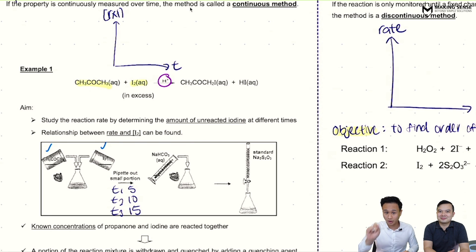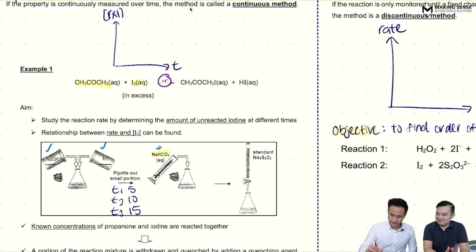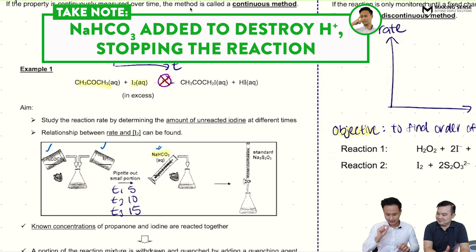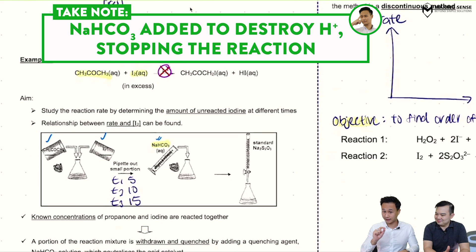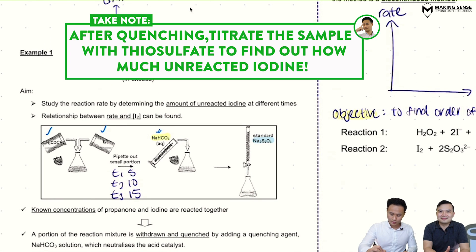Now what I'm going to do here is I need to make sure that the reaction stops. I need to stop the reaction, and how do I do that? We quench it. Quenching just means stopping by adding sodium hydrogen carbonate, which is a base that destroys my H+ via acid-base reaction, so my reaction stops. From there I can find out how much unreacted iodine I have by a simple iodine-thiosulfate titration.